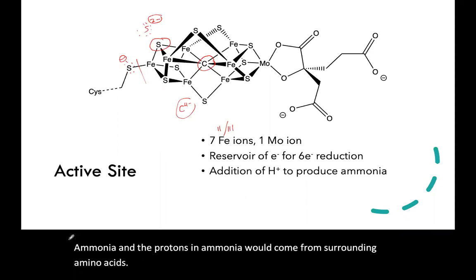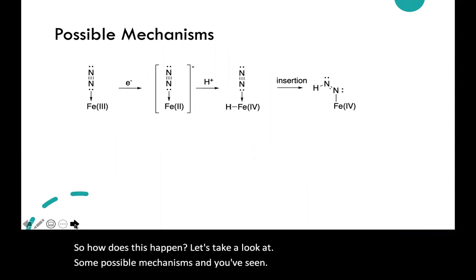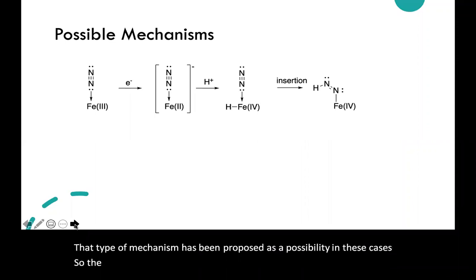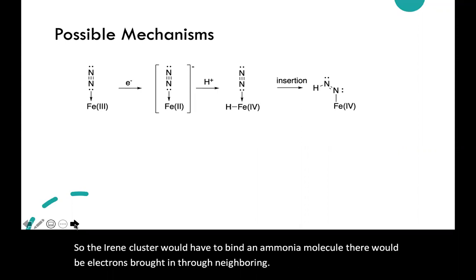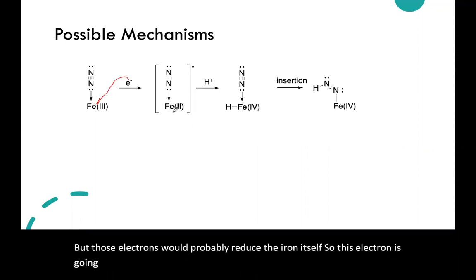So how does this happen? Let's take a look at some possible mechanisms. You've seen organometallic chemistry before, so you've seen things like insertion reactions. That type of mechanism has been proposed as a possibility in these cases. The iron cluster would have to bind a nitrogen molecule, and there would be electrons brought in through neighboring proteins and so on, providing electrons. Those electrons would probably reduce the iron itself, so this electron is going to the iron to try to convert it to an iron(II).